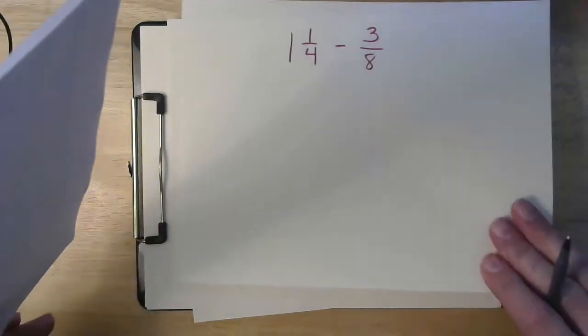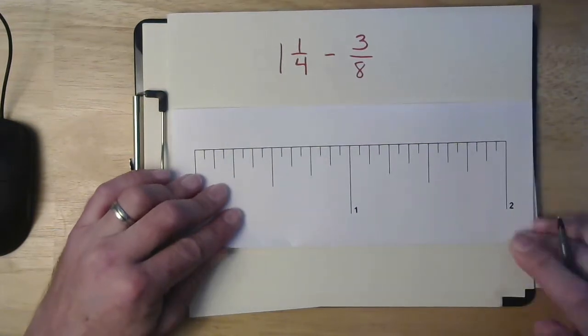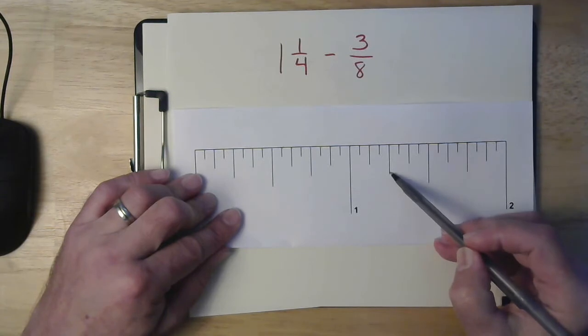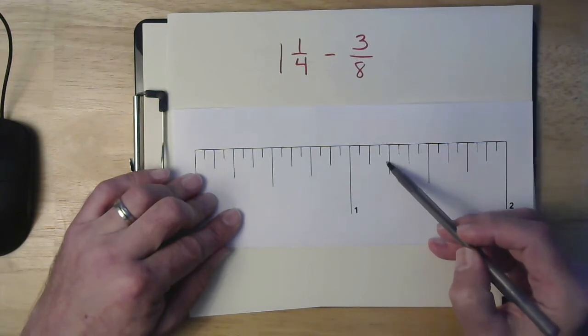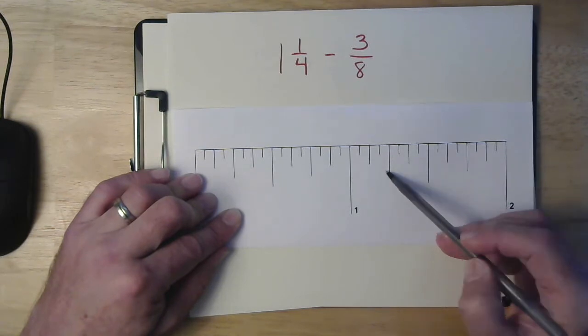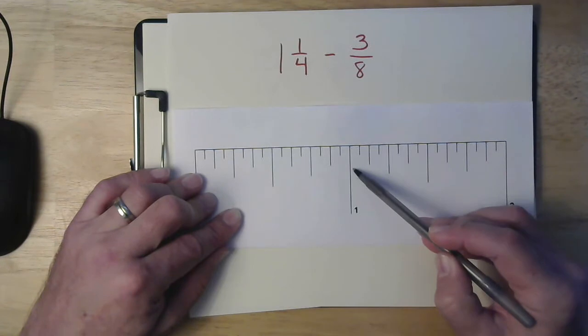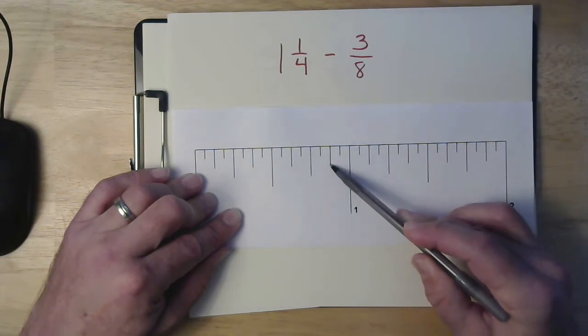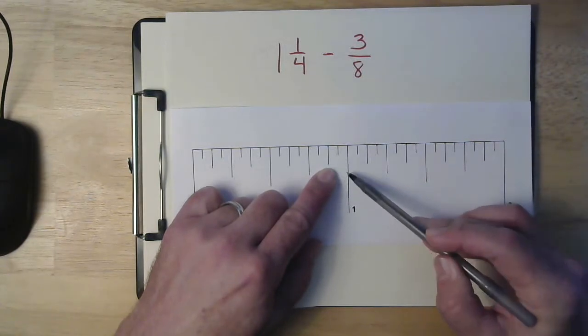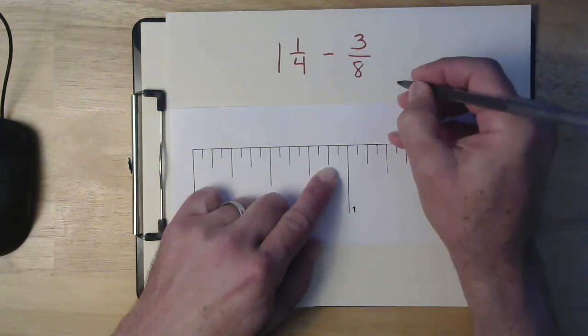And then you can do it for subtraction problems too. Same method. So if I want to do one and a quarter minus three-eighths. One and a half. Here's one and a quarter minus three-eighths. So I know that an eighth is this distance right here. So if I start at one and a quarter minus one, two, three-eighths. So that leaves me one-eighth below one. So that means that's seven-eighths.